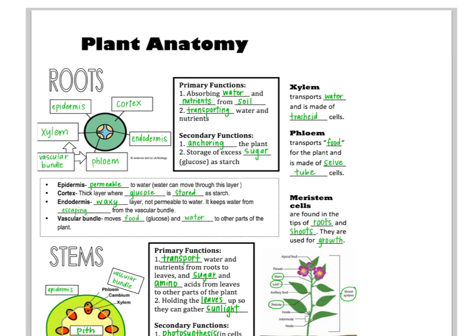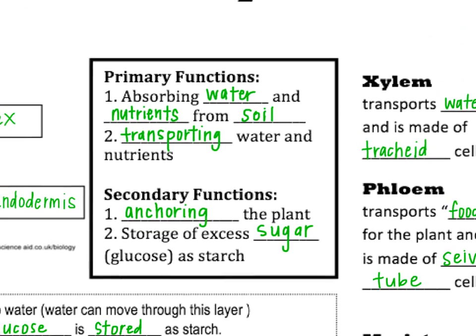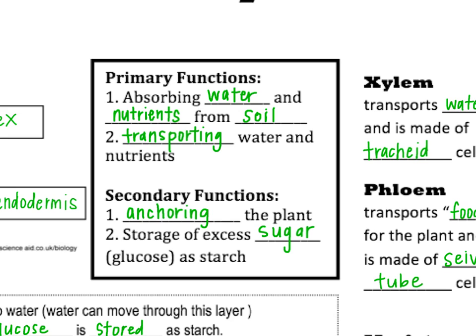Plants can really be broken down into their roots, their stems, and their leaves. We're going to start with the roots. The primary functions of the roots are first to absorb water and nutrients from the soil, and second to transport water and nutrients to other parts of the plant. Other functions are anchoring the plant, making sure it doesn't fall over, and also storing sugar or glucose as starch, saving it for later when there might be a drought.